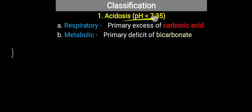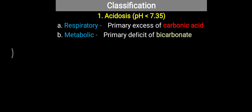The primary condition is pH less than 7.35. If carbonic acid is excessive, it is related to respiratory acidosis, but if bicarbonate is in deficit, then it is considered metabolic acidosis.